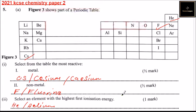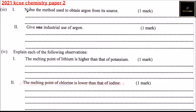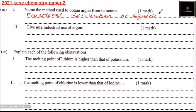You get 2 marks for that. Let's go to the next part — Part 3, number 1: name the method used to obtain argon from its source. Argon is obtained by fractional distillation of liquefied air. That is the method used to obtain argon.